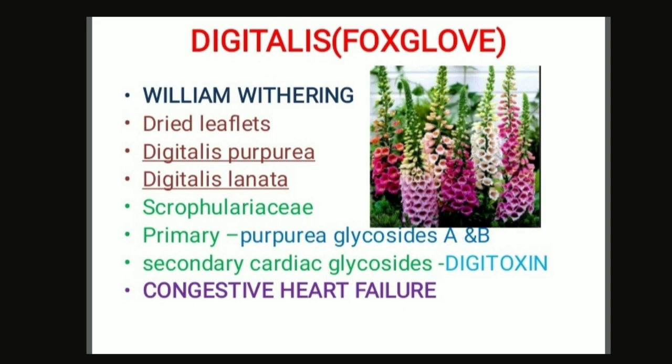Digitalis was found by William Withering. Digitalis consists of dried leaflets of Digitalis purpurea and Digitalis lanata. Its family is Scrophulariaceae. It contains a mixture of both primary and secondary cardiac glycosides. Primary glycosides are purpurea glycosides A and B. Secondary glycosides are digitoxin. It also contains saponin glycosides.